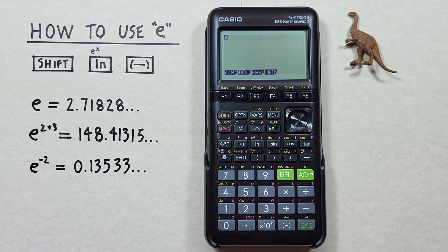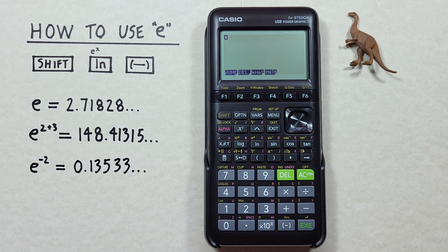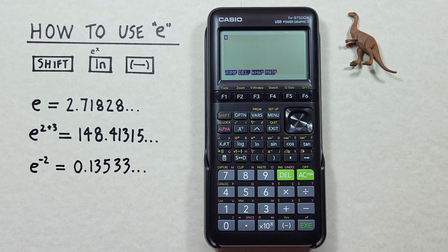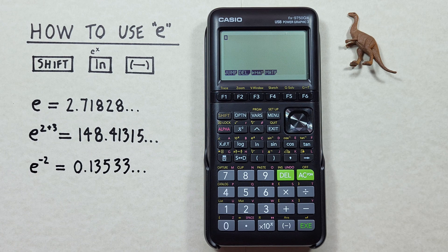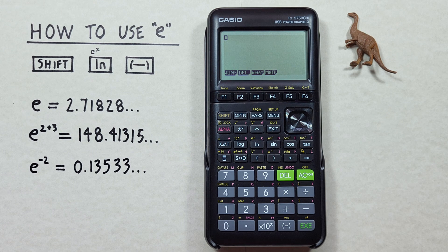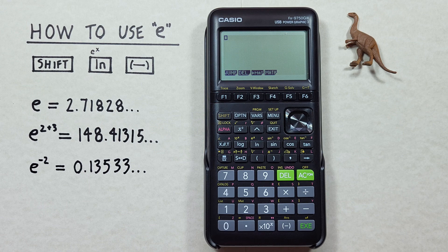Hello and welcome to HD Calcs. I'm Rick, and in this video we're going to have a look at how we can use E, also known as Euler's number or the natural antilog, on the Casio FX 9750 G3 calculator.